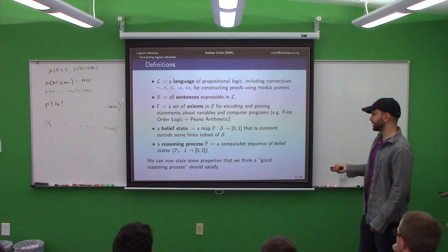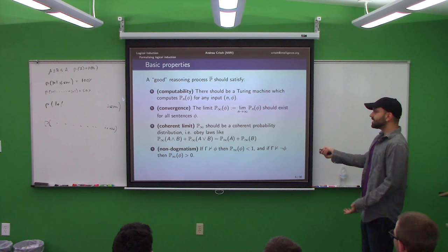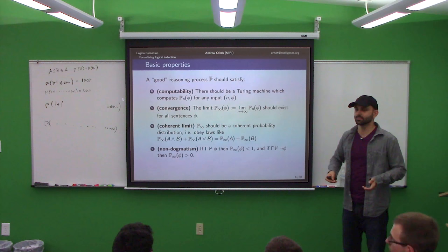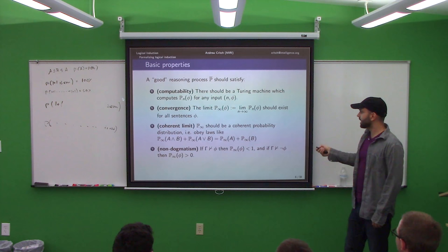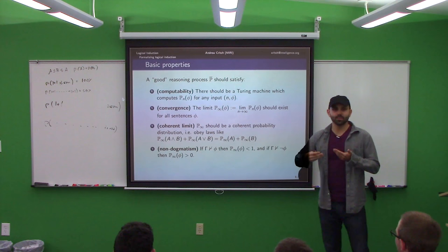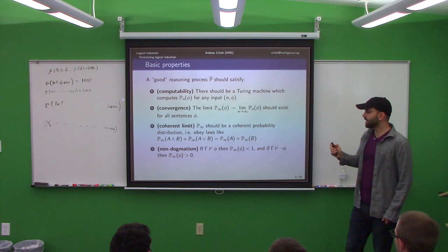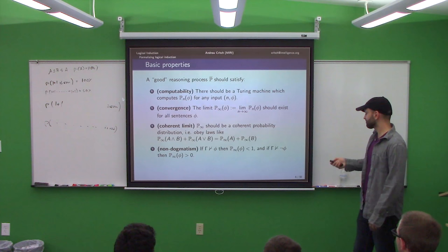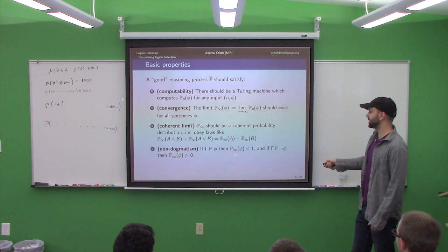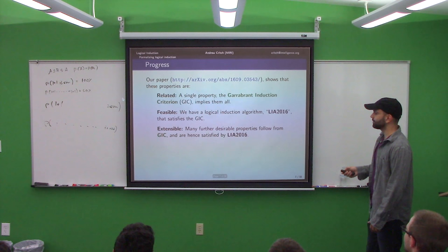Here are some properties you might want for a sequence of belief states. You might want it to actually be computable — we're only going to talk about things you can actually run an algorithm to do. It would be nice if you converged to some answer: fix some sentence like the Riemann hypothesis or the continuum hypothesis, think about it for a long time, maybe you should make up your mind. Maybe you should demand that in the limit you actually satisfy the laws of probability theory. And maybe you should not believe stuff you can't prove — if the proof system doesn't prove phi, maybe you'd like not to assign it probability one. We have an algorithm that does all those things.